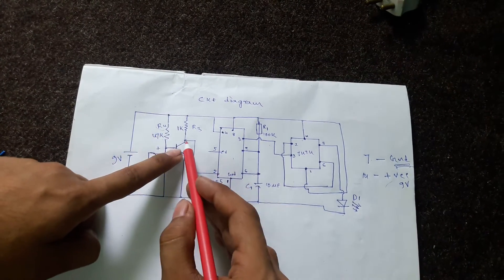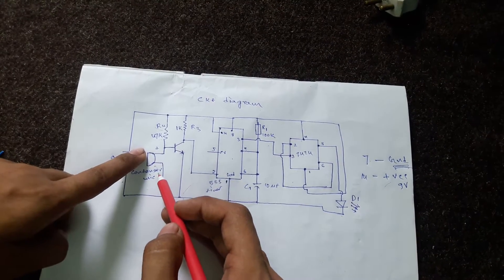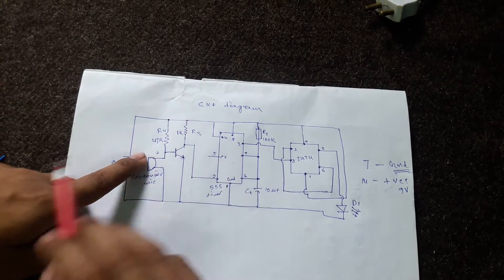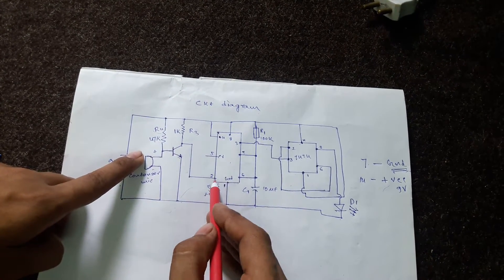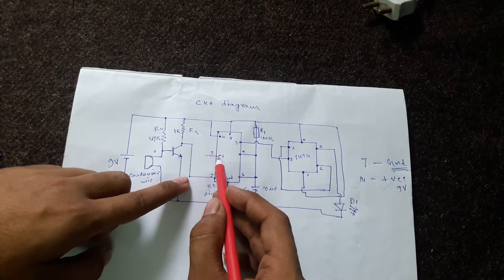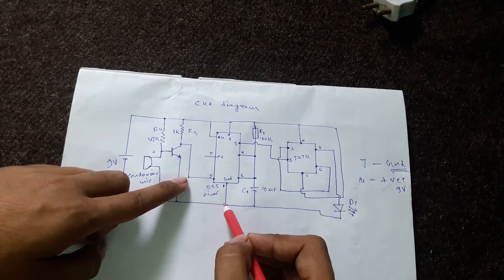The condenser mic converts sound energy into electrical energy, which triggers the 555 timer. Terminal 5 of the 555 timer will be of no use here, and pin 1 will be directly grounded.